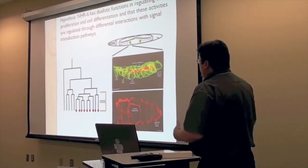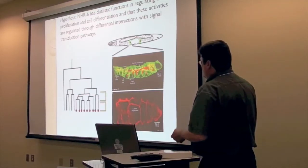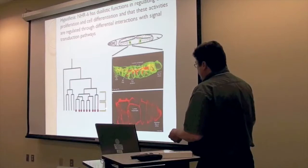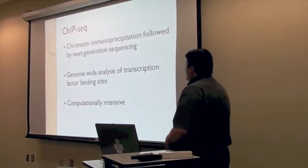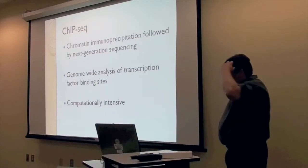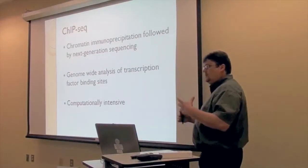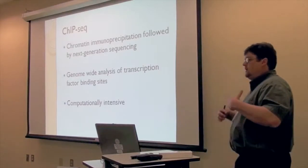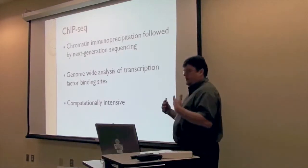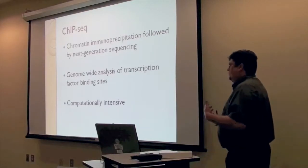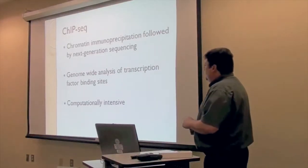Looking at the cell lineage, I'm interested in activities during the cell proliferation phase of the organ and then later during cell differentiation. Up to this point I've been mostly doing classical genetics type studies — mutant analysis, identifying enhancers and suppressors. We do a lot of genetic interactions, trying to get at some of the pathways that NHR6 is involved in.